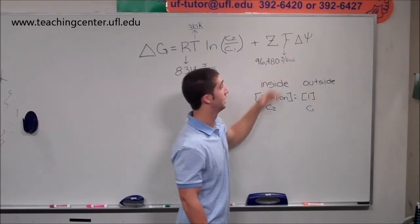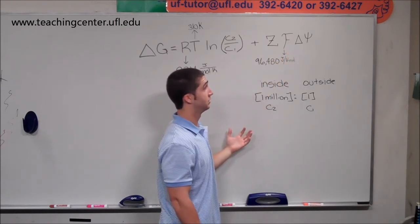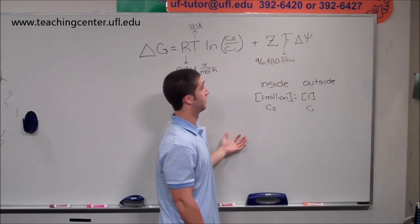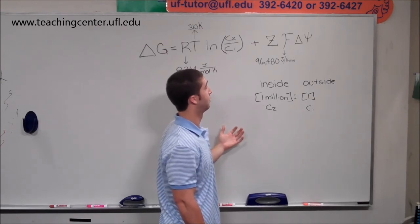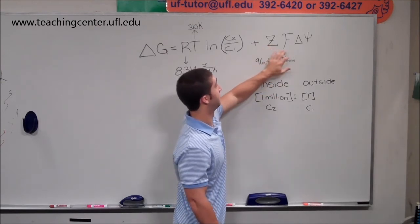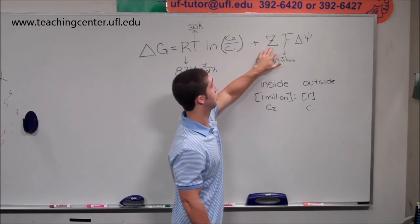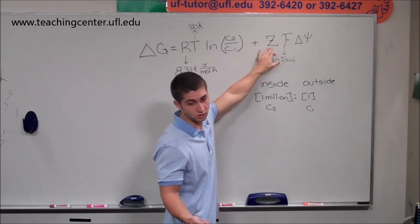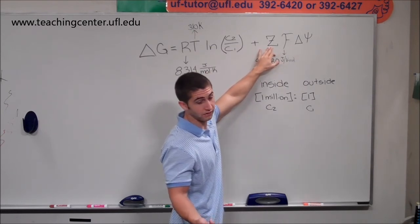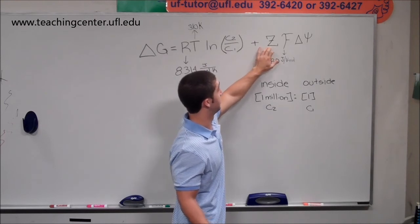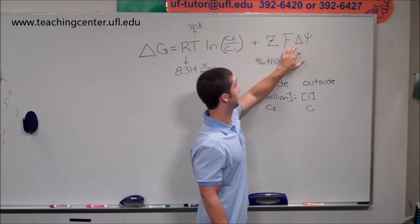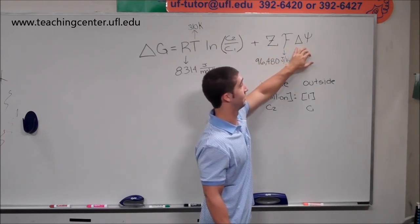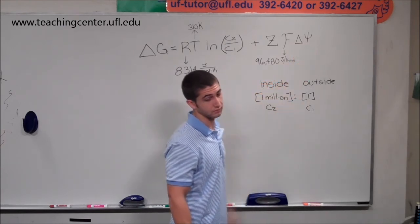So now they're saying 50 millivolts. So they gave it in millivolts. So you need to convert that to volts, which divide by 1,000. That will be 0.05 volts times Faraday's constant times this is the charge of the species, which is given. And it says the charge is negative one of phosphatidylserine. So that will be negative one times Faraday's constant times a negative 0.05 volts because they said it was negative to the inside.